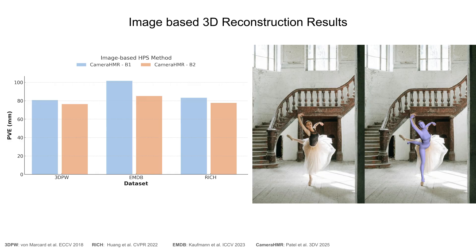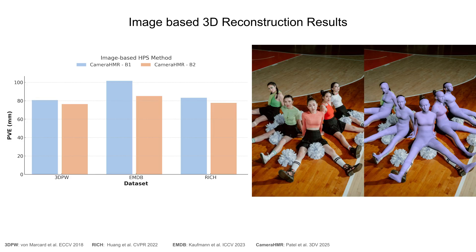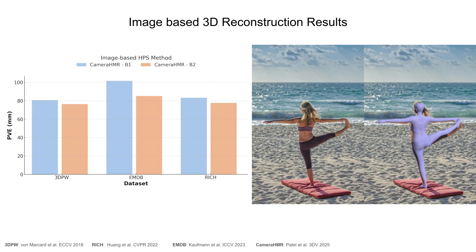Bedlam 2 is a video dataset, but it can also be used to train single image methods. Here we train Camera HMR, a recent state-of-the-art method, using Bedlam and Bedlam 2 and report per-vertex error. The inclusion of more diverse camera poses and varying focal lengths in Bedlam 2 improves accuracy on multiple real-world benchmarks. Additionally, incorporating poses from the Moyo dataset contributes to better performance on challenging yoga poses.